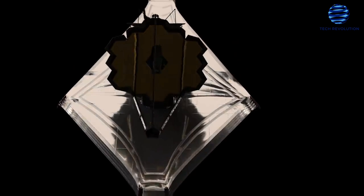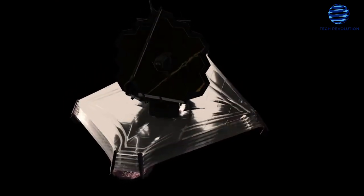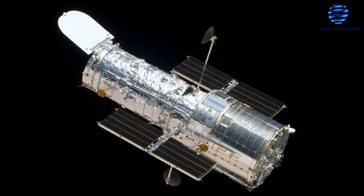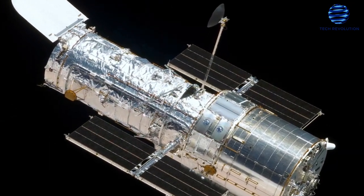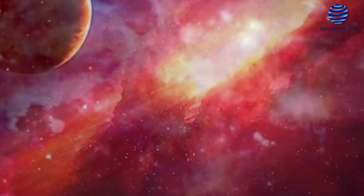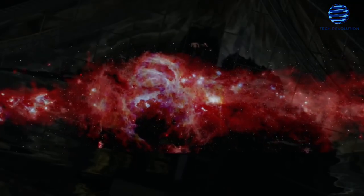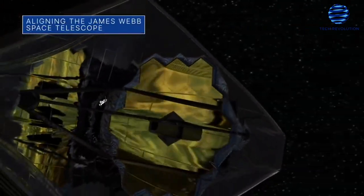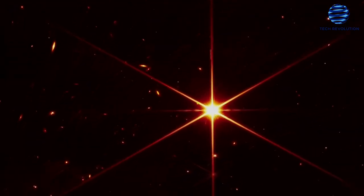One important reason for JWT's power is that it is largely an infrared telescope, whereas Hubble is predominantly a visible light telescope. Because the universe's oldest light is red-shifted into the infrared, infrared is extremely powerful. This enables JWST to stare further and deeper into the universe, seeing objects that Hubble is unable to see.